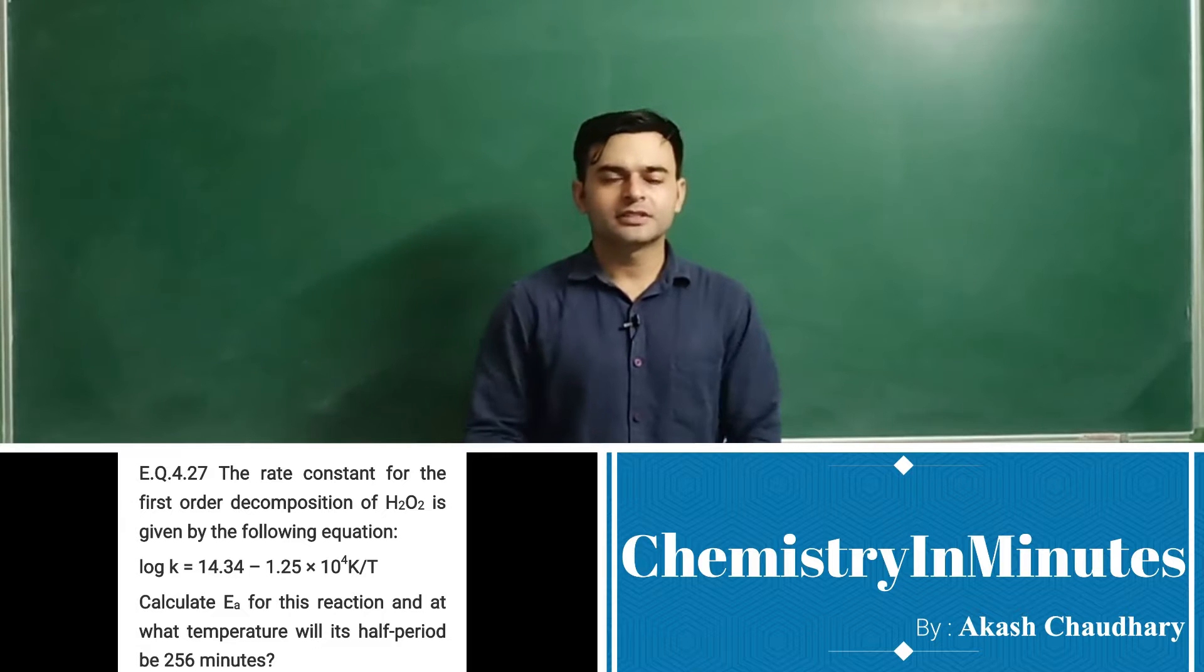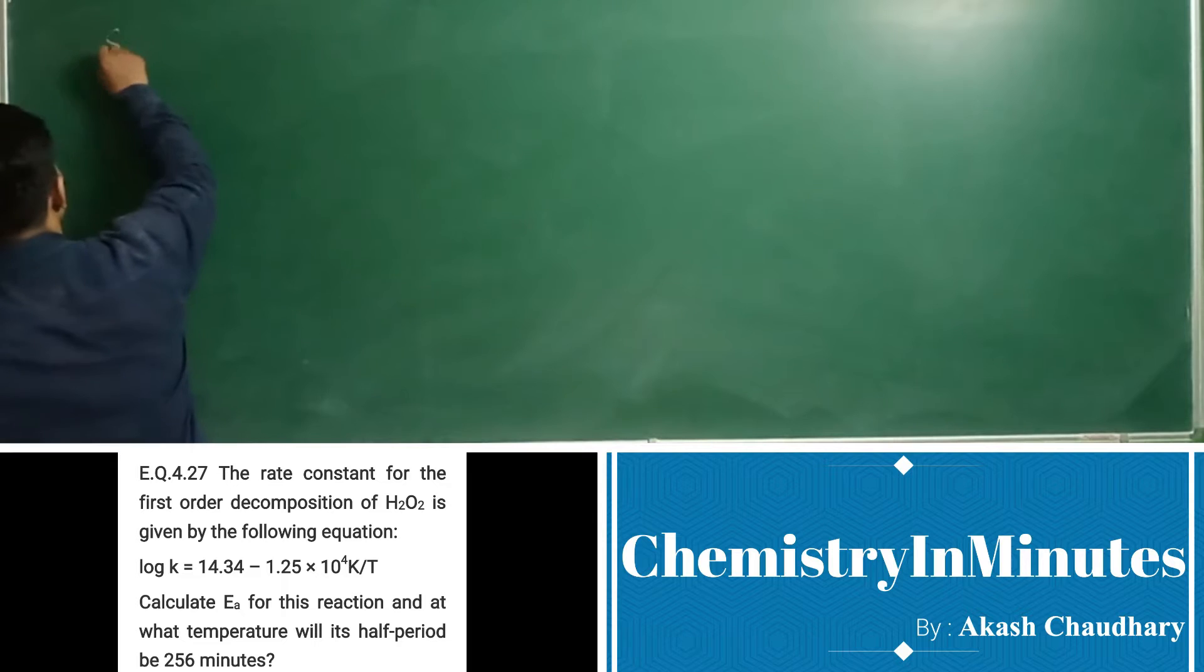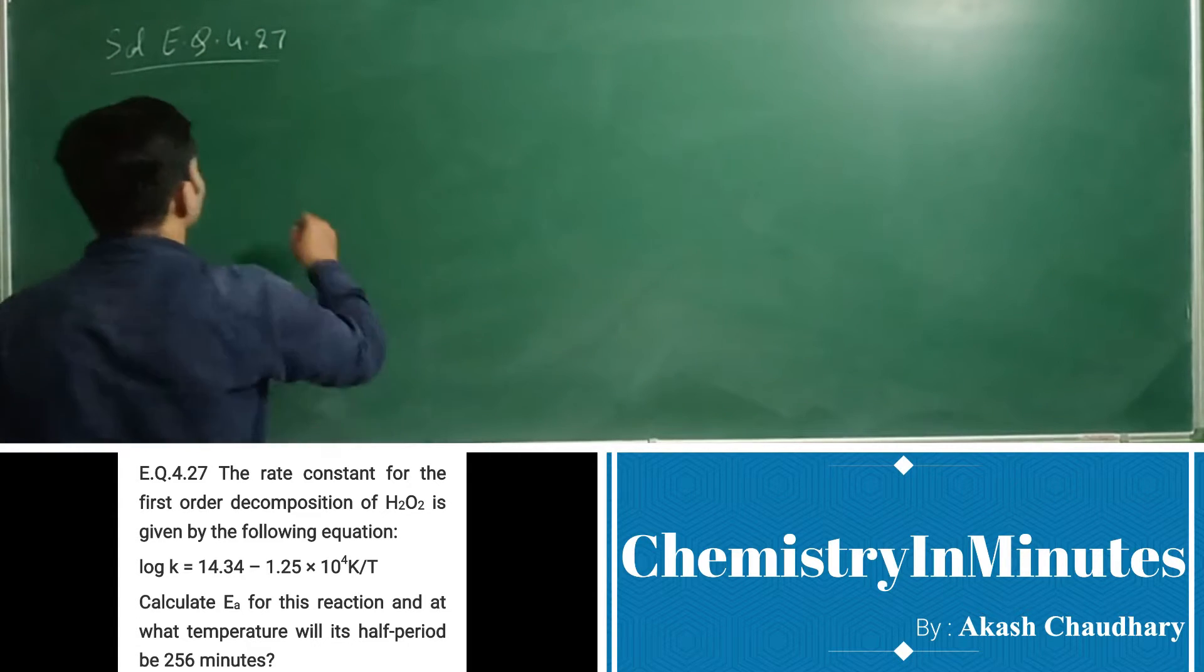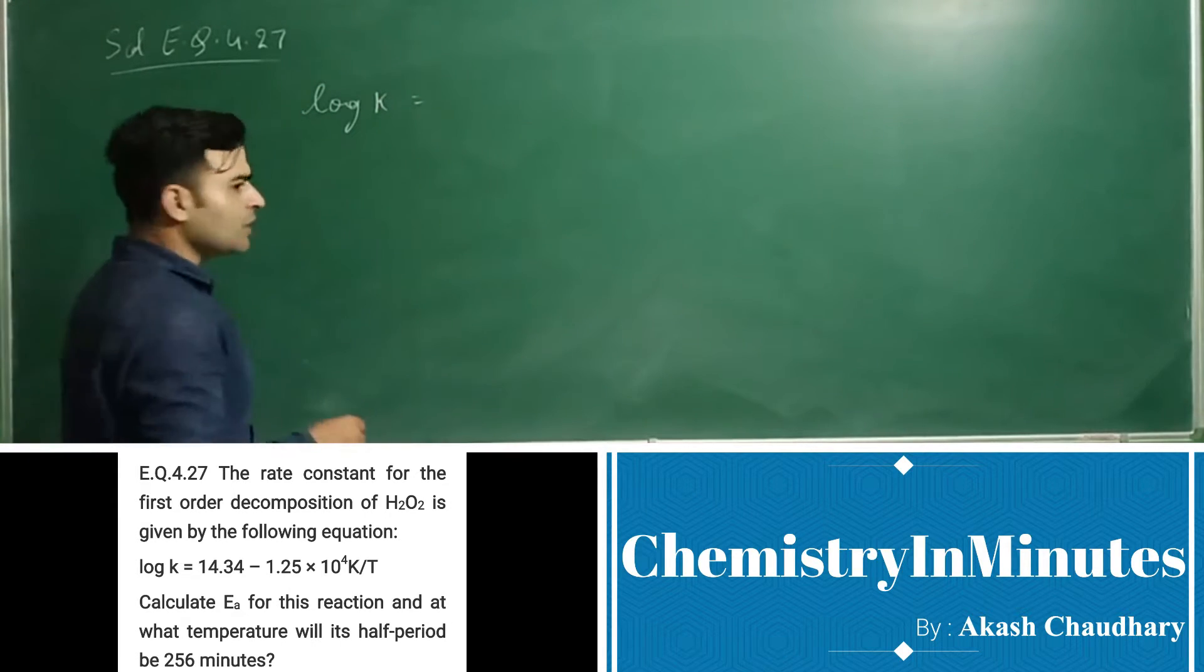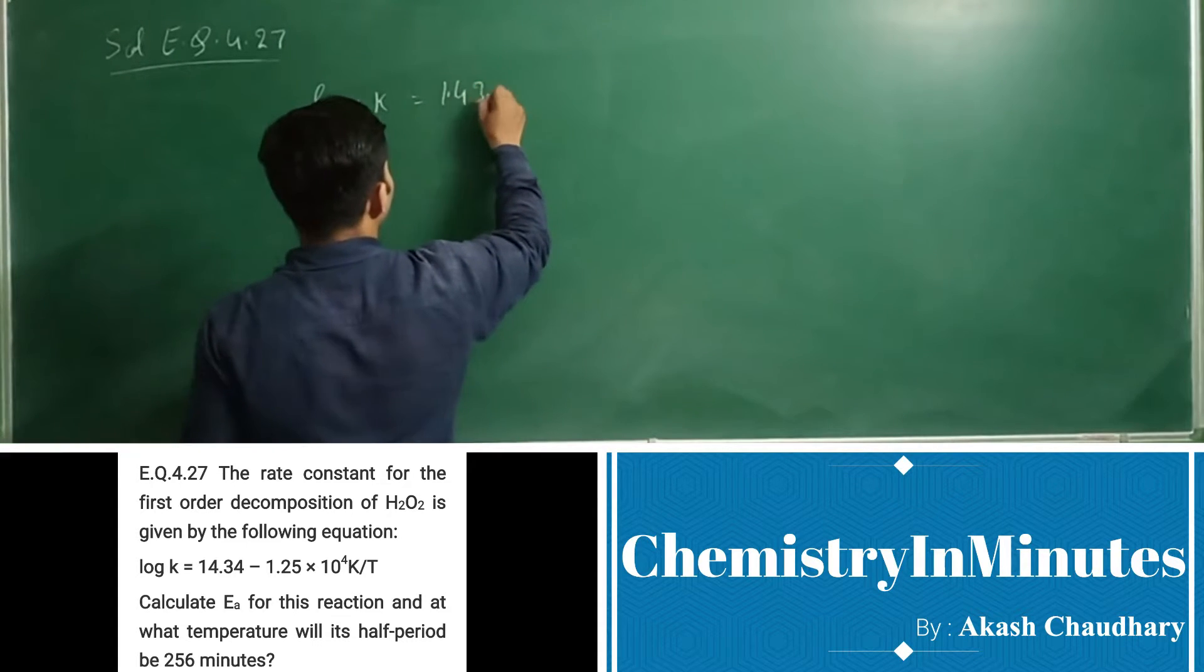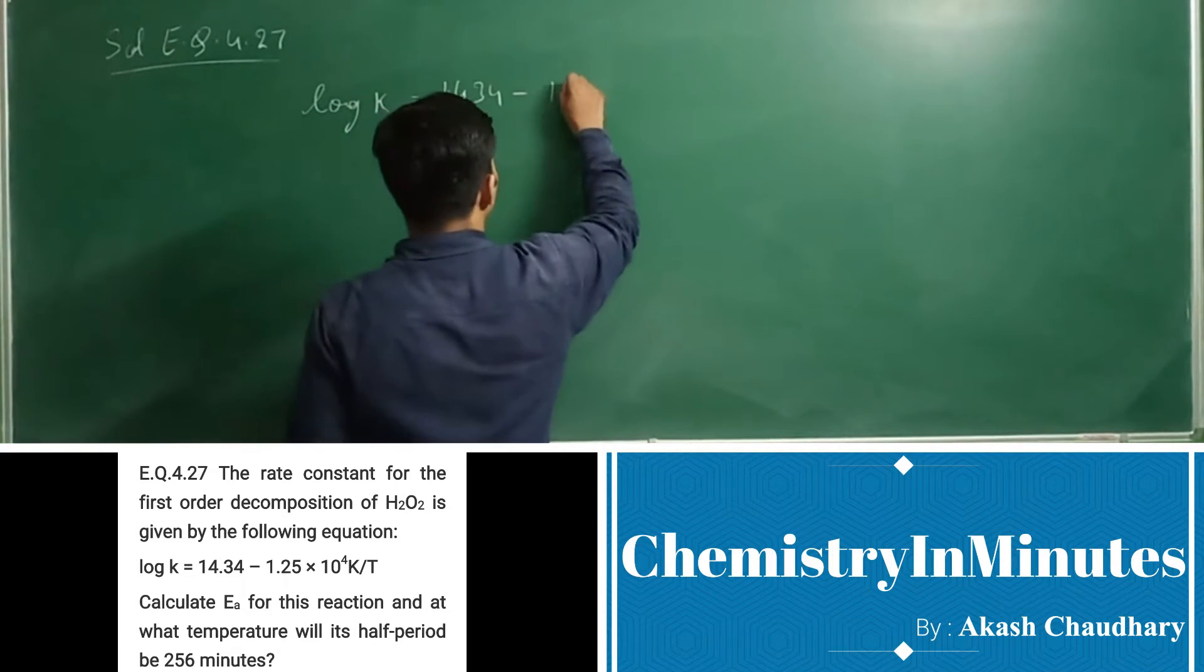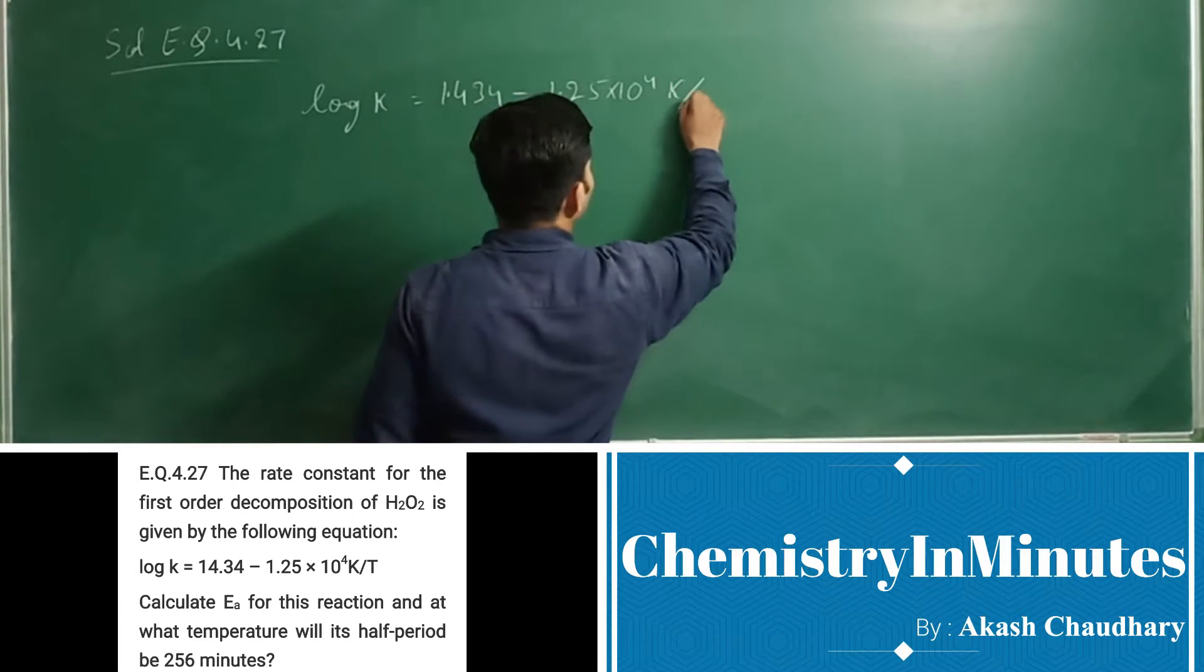So let's start solving this question. Solution to exercise question 4.27. First we have given the equation: Log k equal to 14.34 minus 1.25 into 10 to the power 4 K by T.